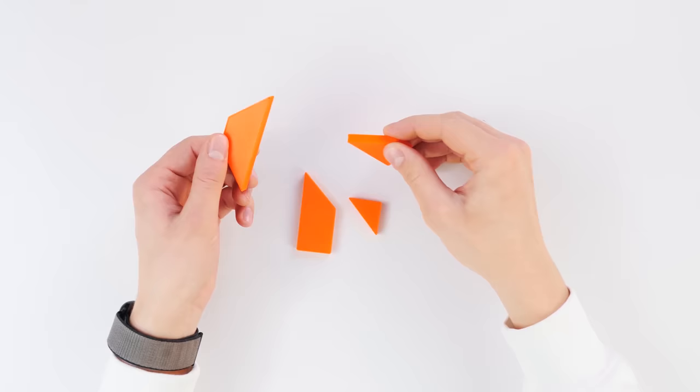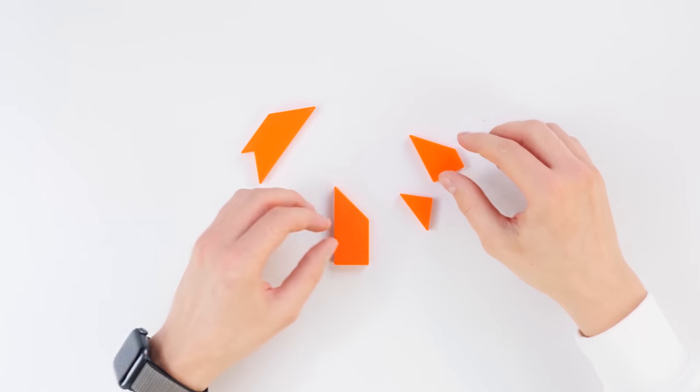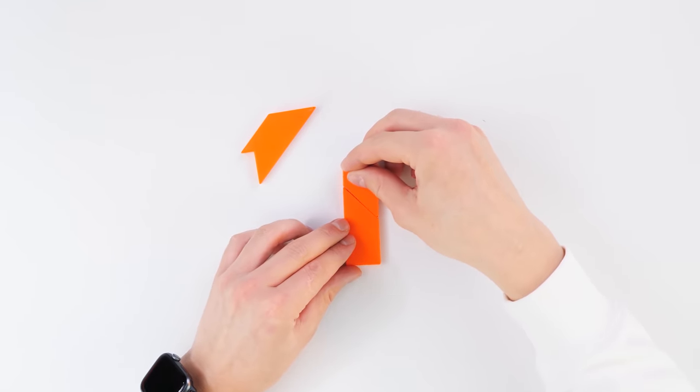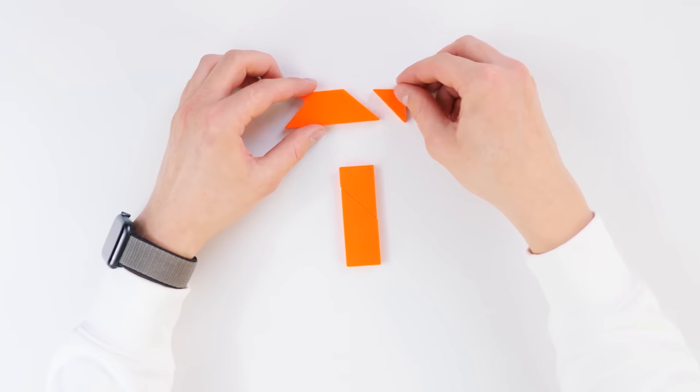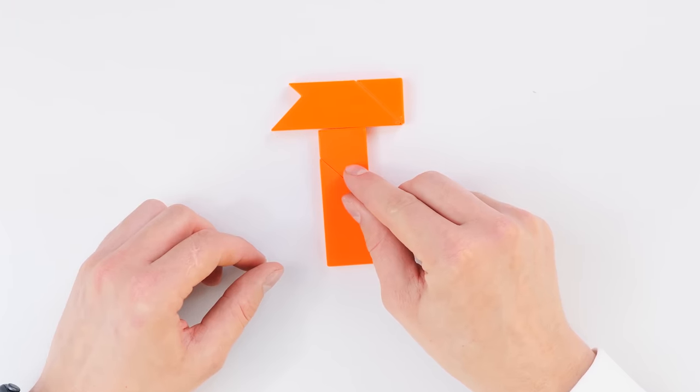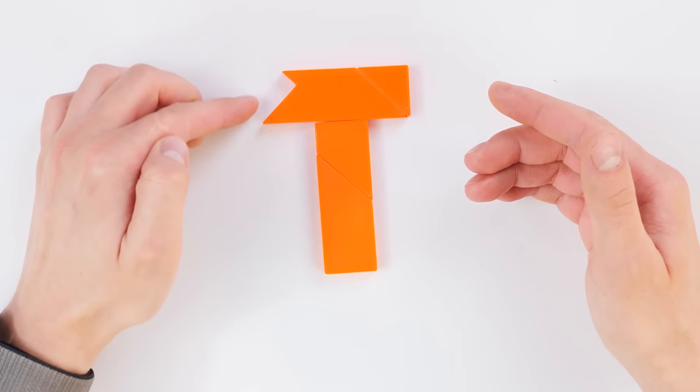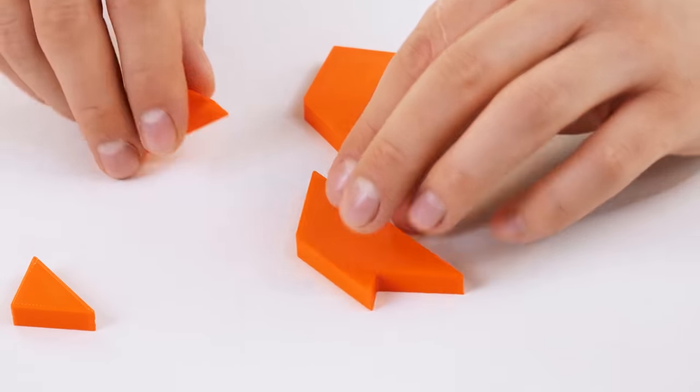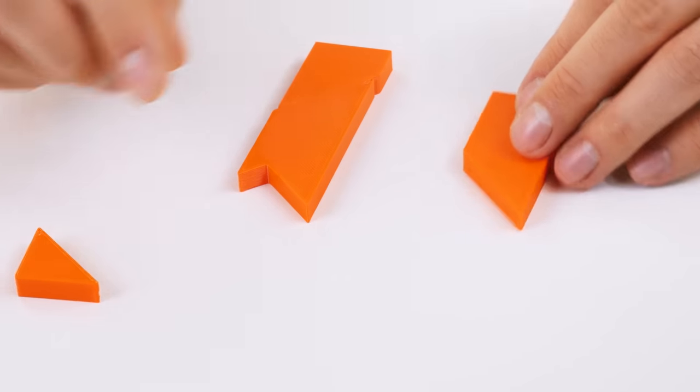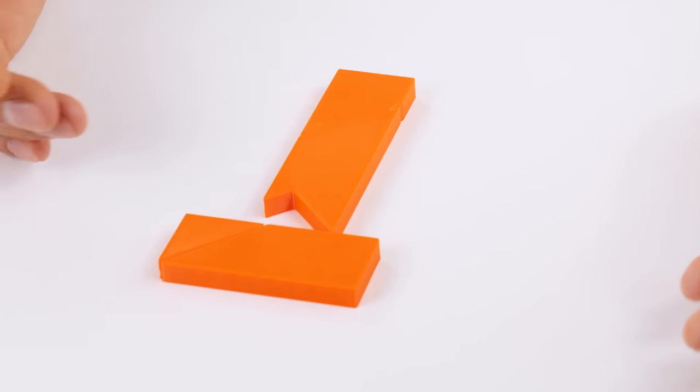Now I will reveal the secret of this puzzle and similar ones. The thing is, when somebody gets a task to gather letter T, he tries to imagine a letter T which consists of two perpendicular rectangles. But as you can see, we have got imperfect letter T, it seems like some detail is missing. And no matter how we change the details position, we can't achieve a perfect smooth letter T.